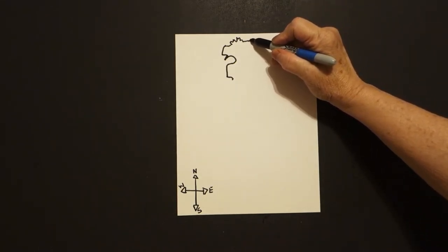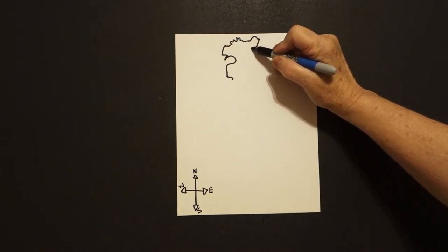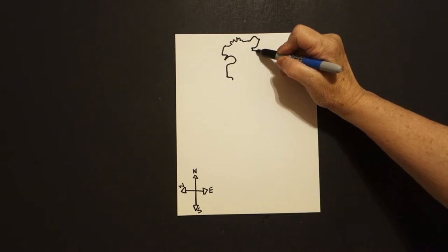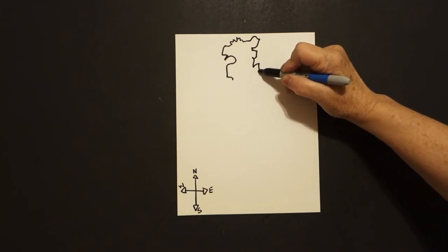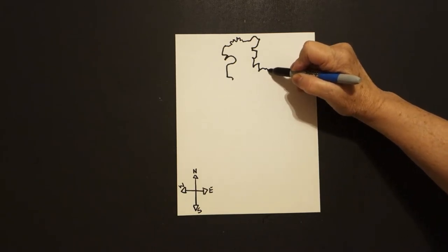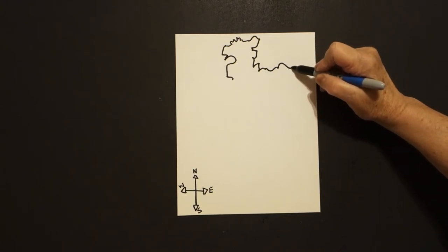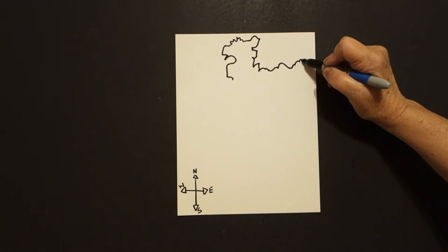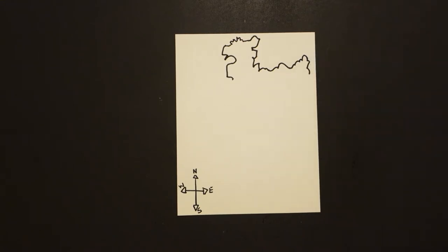We're going to draw a curve line, up, out, curve line in, down, straight line out, straight line, curve line in, curve line down, up, down, up, up, over, curve line down, up, up, up, up, over — curve line, curve line out — and leave it floating. Now everybody's is going to look different because we all draw differently, so just keep going.